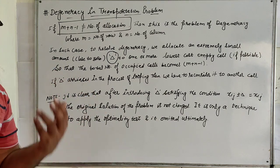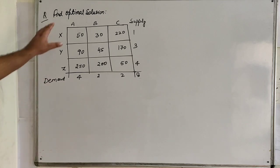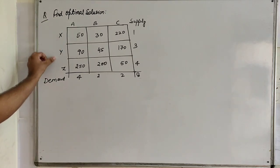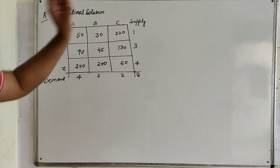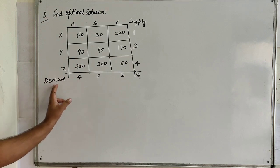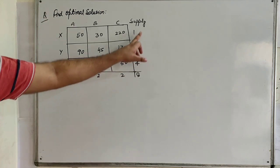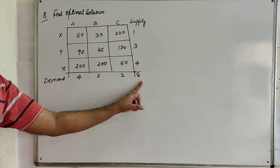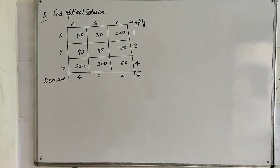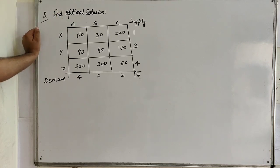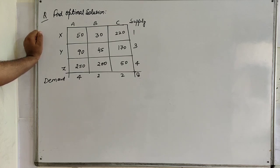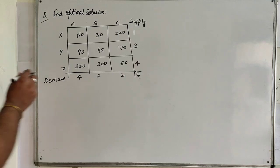For better understanding, we are taking one example. The problem is to find the optimal solution. Here X, Y, Z are the industries and A, B, C are the markets or warehouses. The demand is 4, 2, 2 — total 8 — and the supply is 1, 3, 4 — total 8. This is a balanced problem. To find the optimal solution, we first find the basic feasible solution, and the best method for that is the Vogel Approximation method.